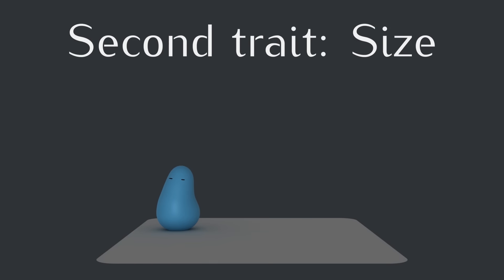Alright, now that we've gotten our feet wet with one varying trait, let's add two more: size and sense. First size. Size scales the creature in all three dimensions. The benefit of size is that it lets you eat other creatures if you're at least 20% larger than them. Getting an extra food source is great if you can pull it off, but being big costs a lot of energy.